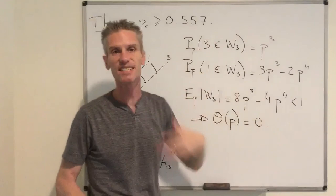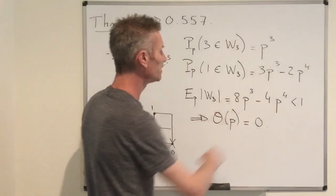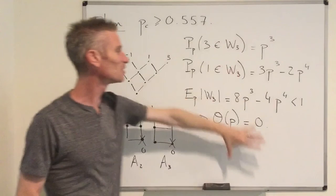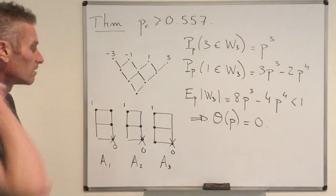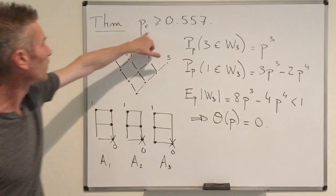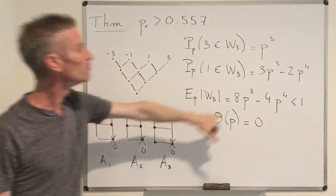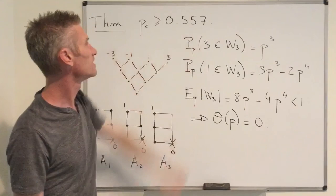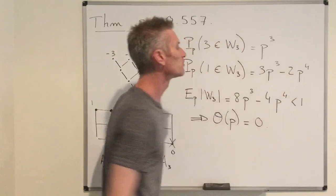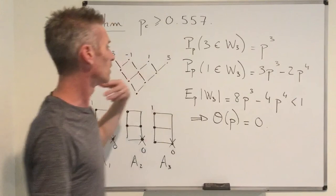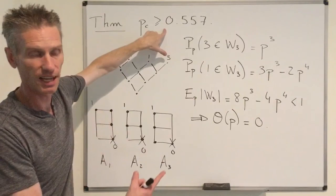The proof is now essentially complete. Using a calculator, one can verify that for all p less than 0.557, the inequality 8p³ − 4p⁴ < 1 holds. This means that for all p less than 0.557 there is no percolation, so the critical value PC must be at least 0.557. This establishes the lower bound in the theorem.